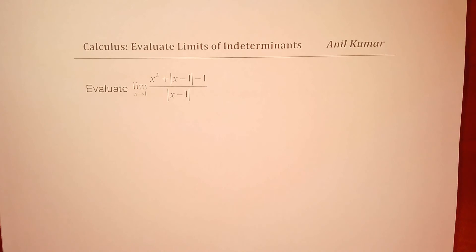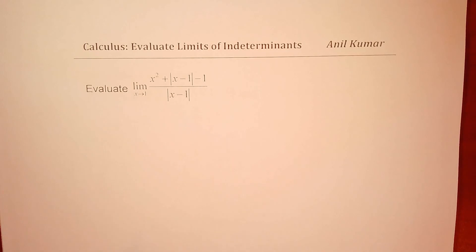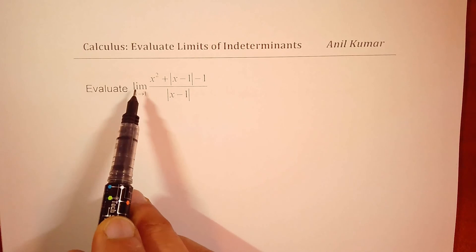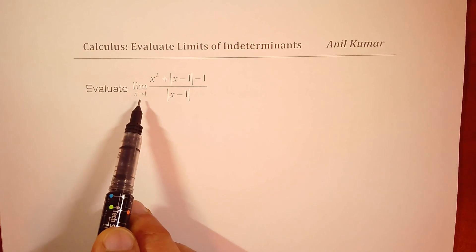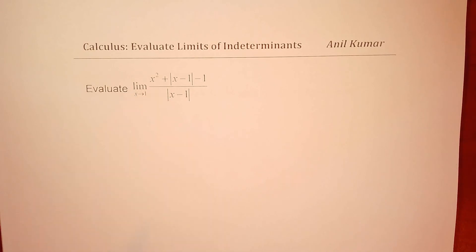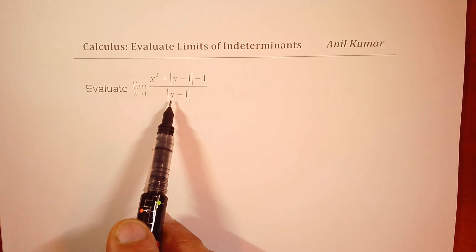I am Anil Kumar sharing with you a test question on limits. We have an absolute function involved in this question. We need to find the limit when x approaches 1 for x squared plus absolute value of (x minus 1), minus 1, divided by absolute value of (x minus 1).